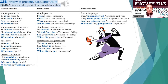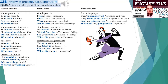You're in room 4. You aren't in room 4. Are you in room 4? Where are you? She works in an office. She doesn't work in an office. Does she work in an office? Where does she work? You can park here. You can't park here. Can I park here? Where can I park?